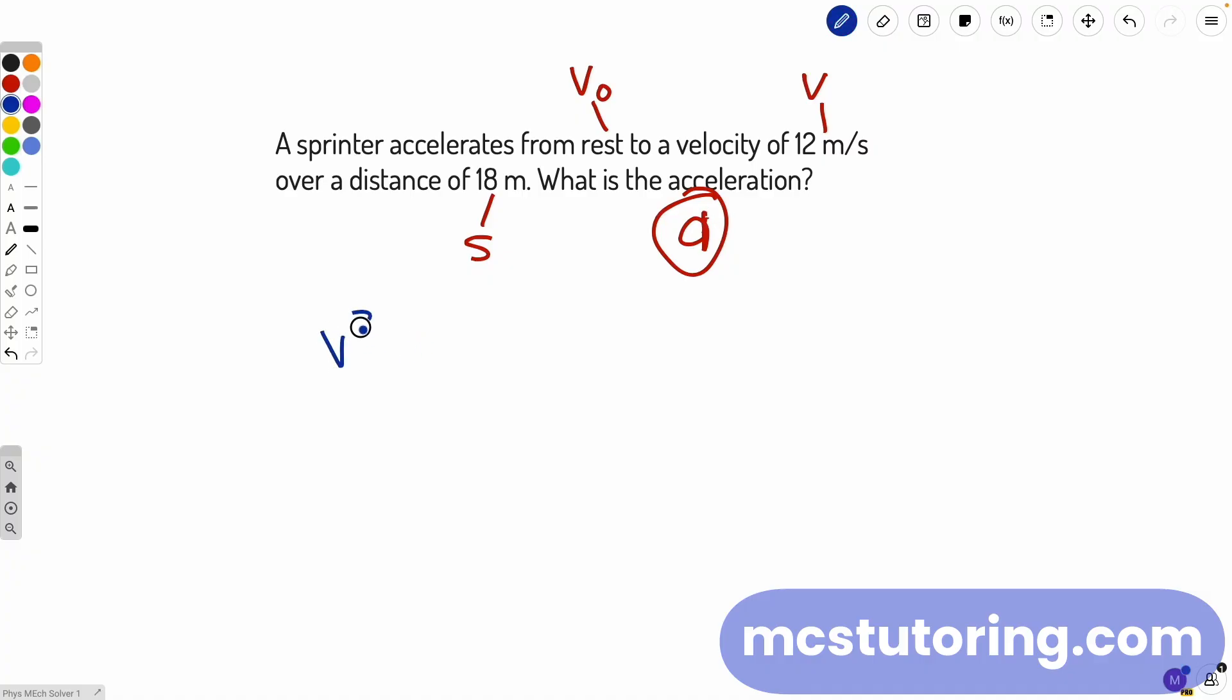Either way, we're going to be using this equation: V² equals V₀² plus 2A times S minus S₀.